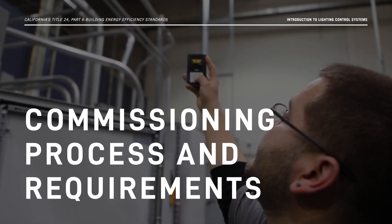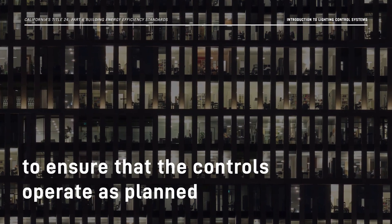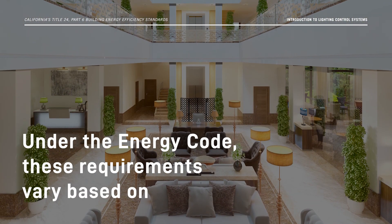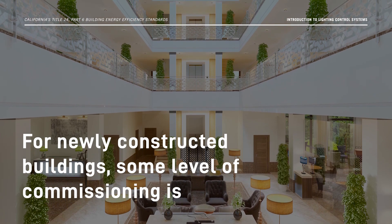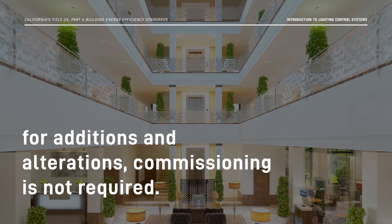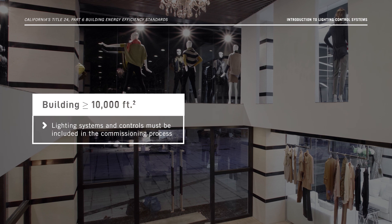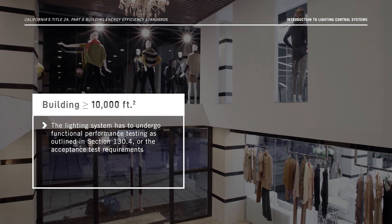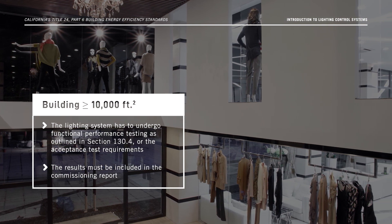Moving on to commissioning requirements. Commissioning is required for all newly constructed non-residential buildings to ensure that the controls operate as planned and expected by the building owner. Under the Energy Code, these requirements vary based on the size of your building and the type of project. For newly constructed buildings, some level of commissioning is always required for compliance, but for additions and alterations, commissioning is not required. If your newly constructed building is 10,000 square feet or larger, lighting systems and controls must be included in the commissioning process. The lighting system has to undergo functional performance testing as outlined in section 130.4 or the acceptance test requirements, and the results must be included in the commissioning report.